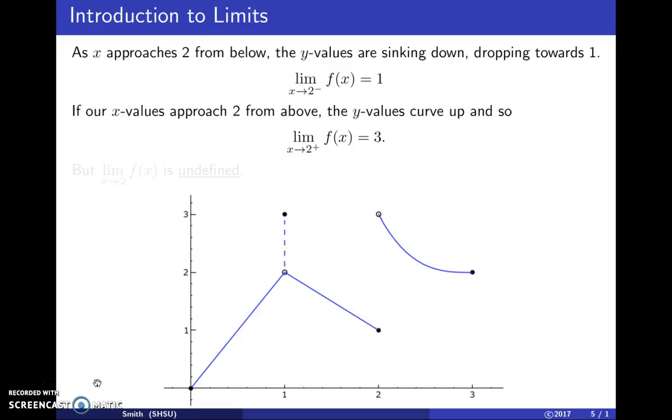If our x values approach two from larger values, then the y values curve up and approach three. So if you have x values from the right of two and we walk toward two, the y values on this curve will be rising up to three. So the limit as x approaches two from larger values will be three.